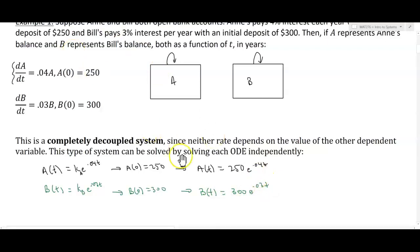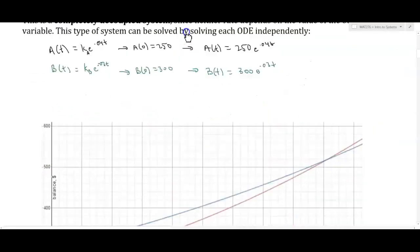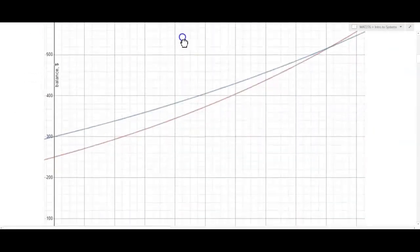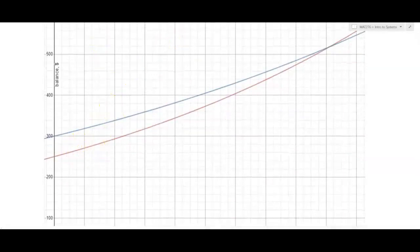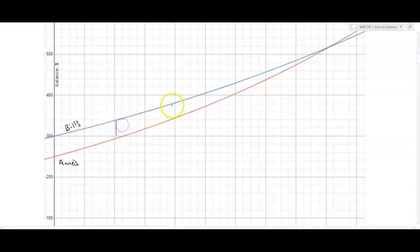So if we take a look at a graph of these functions now. So here we have in red, we have Ann's balance. And here we have Bill's function. And the reason we know that is because Bill's balance starts off higher. But you can see it grows at a slower rate. And the difference between their two functions gets smaller and smaller and smaller. And then eventually at some point here, Ann's balance exceeds Bill's balance.